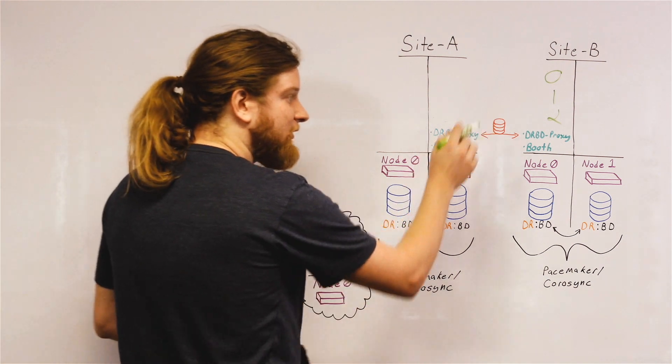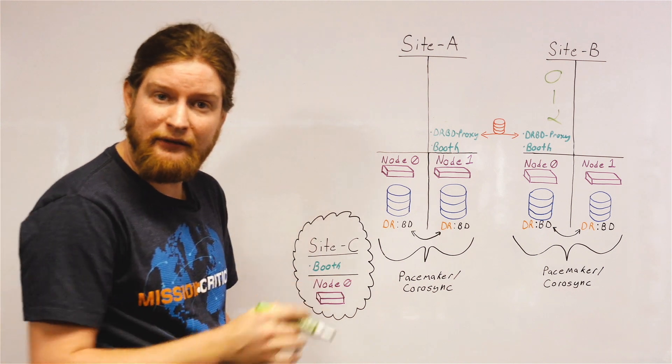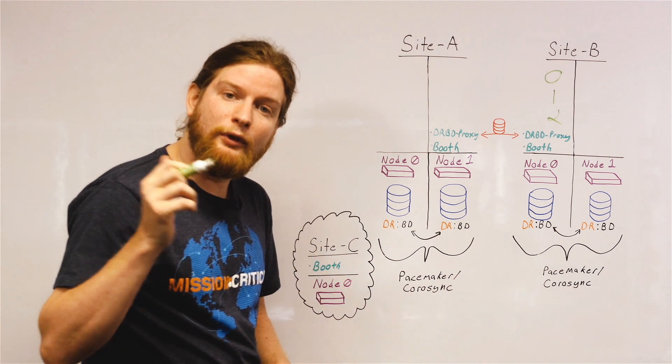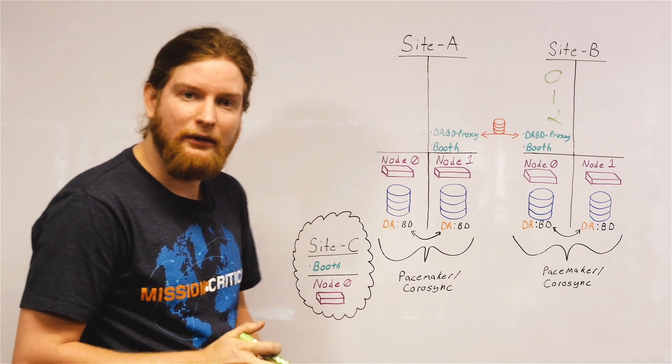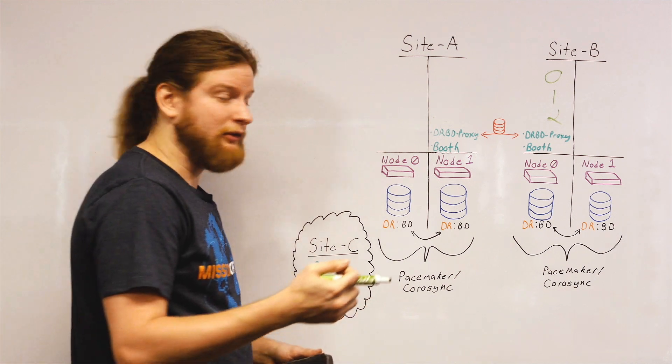So if this site has the Booth ticket, if Booth has decided this site can run services, then those services are allowed to run that are constrained to the ticket. That's how we start and stop services over long distances.